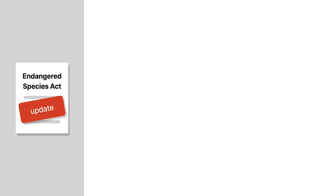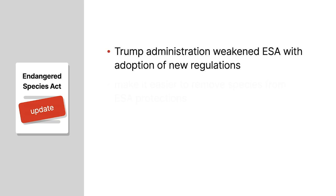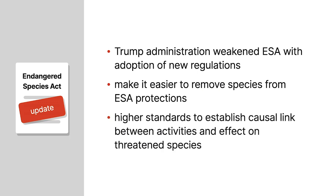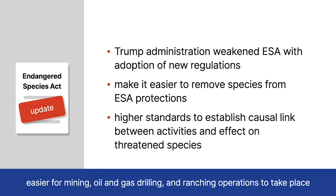In 2019, the Trump administration weakened the ESA via new regulations, making it easier to remove species from ESA protections and raising the standards to establish causal links between activities and their effect on threatened species. This made it easier for mining, oil and gas drilling, and ranching operations to take place in areas populated by endangered species. Fast forward to 2022, and President Biden has increased those protections — stopping the Keystone Pipeline, among other things, to strengthen those laws. Now I'm going to introduce Paul, who will give some additional thoughts and diversity of perspective on this field of environmental protection.